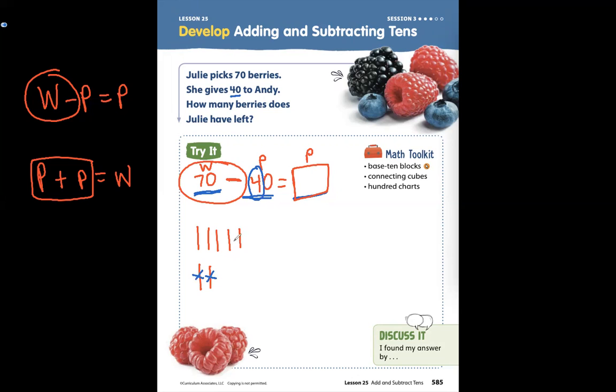One, two, three, four. How many 10s are left? Three 10s are left. What is the value of three 10s? You have to count by 10s. 10, 20, 30. There are 30 berries left.